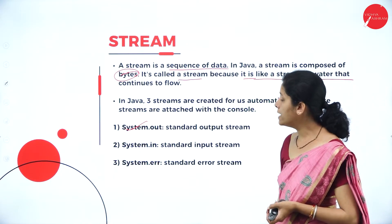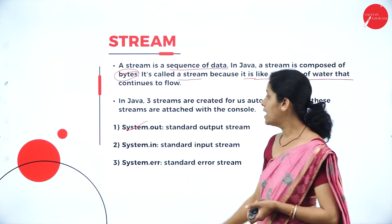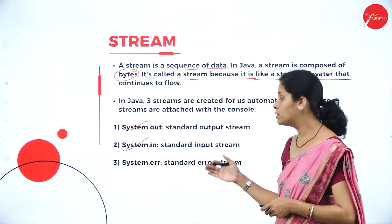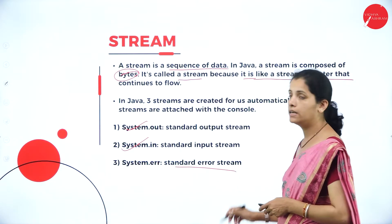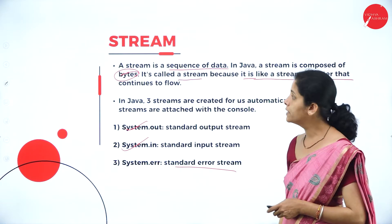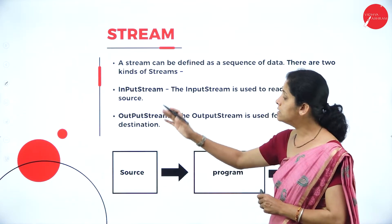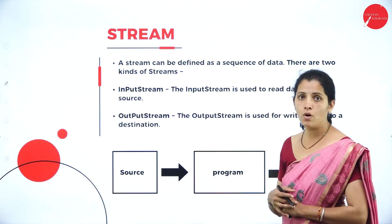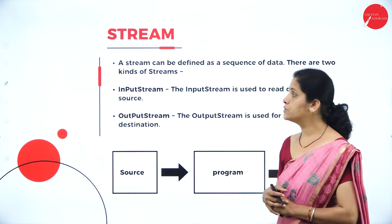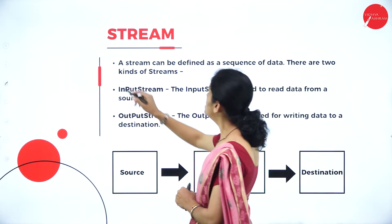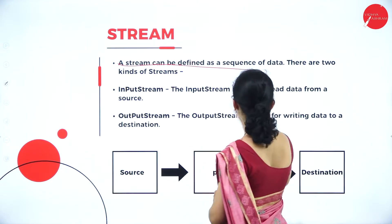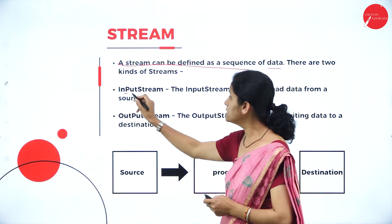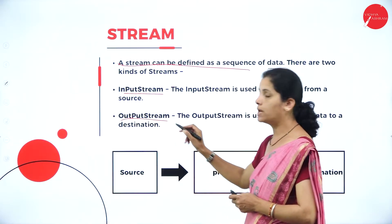Java provides three kinds of streams: System.out, the standard output stream; System.in, the standard input stream; and System.err, the standard error stream. A stream can be defined as a sequence of data. There are two types of streams: input stream and output stream.